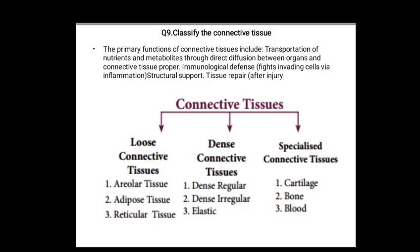Question number nine: classify connective tissue. Connective tissues are classified into three main categories: loose connective tissue, dense connective tissue, and specialized connective tissues. Loose connective tissues include areolar tissue, adipose tissue, and reticular tissue. Dense tissue includes dense regular, dense irregular, and elastic tissue. Specialized connective tissue includes cartilage, bone, and blood.